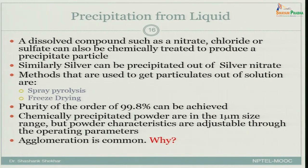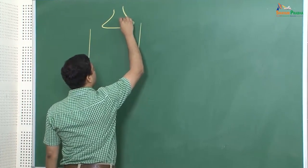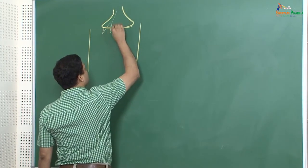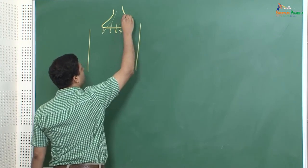There are some more ways where you can get precipitates out from the liquid. Two of those methods are spray pyrolysis and freeze drying. In spray pyrolysis, you have a liquid which is basically a supersaturated solution and you allow it to spray through a nozzle.